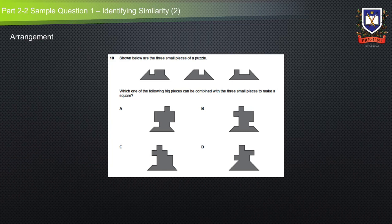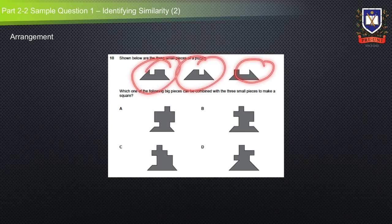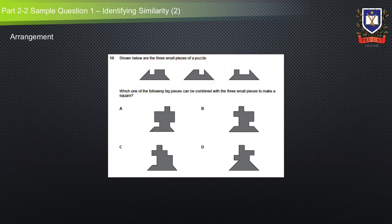Let's look at this example of an arrangement question — identifying similarity — from the Selective Sample Thinking Skills exam. Shown below are three small pieces of a puzzle. Which one of the following big pieces can be combined with the three small pieces to make a square? This question falls in the identifying similarity category, as it requires students to identify similarities between the shapes and the answer options.